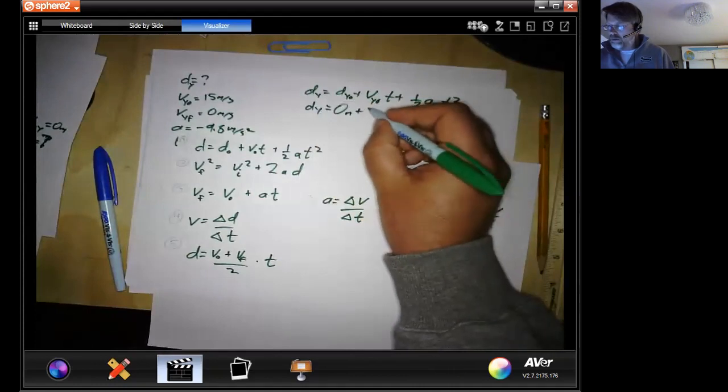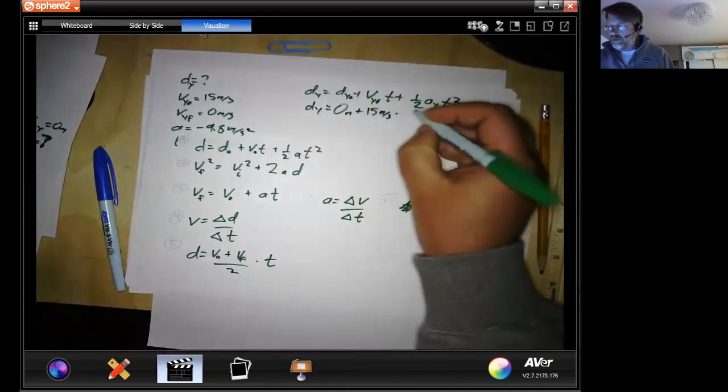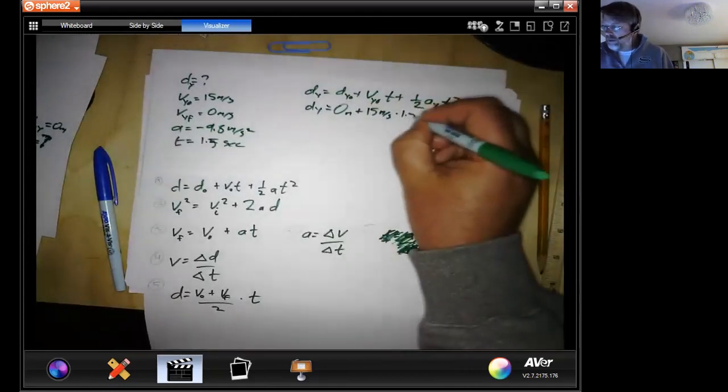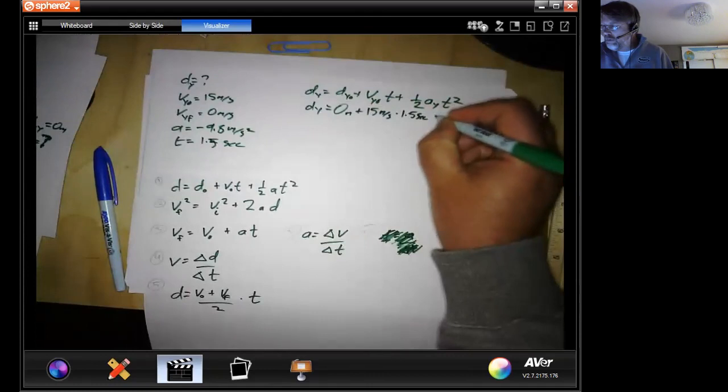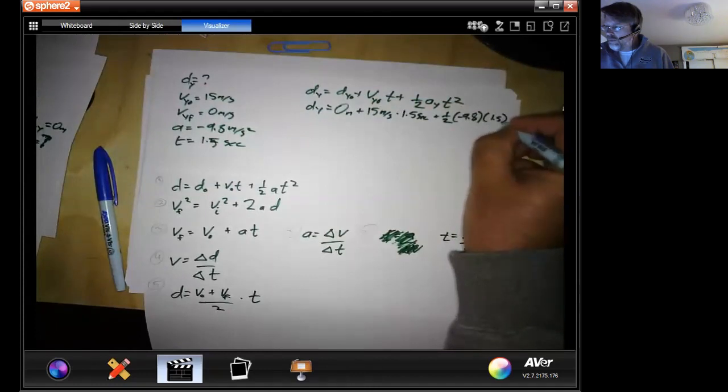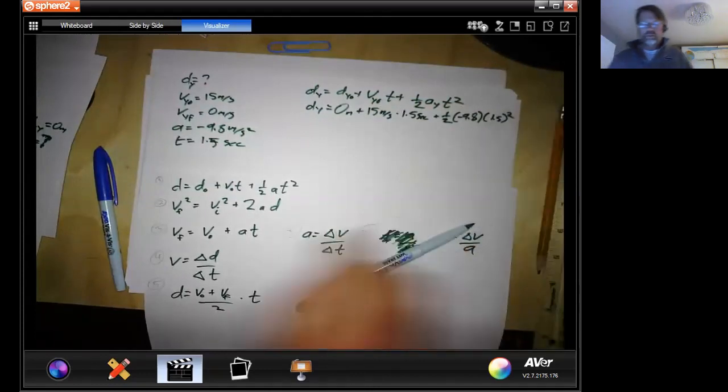Plus 15 meters per second times time. We already know, right? 1.5 seconds. So we just solve for that plus 1.5 squared. That means we should just be able to grab a calculator here.